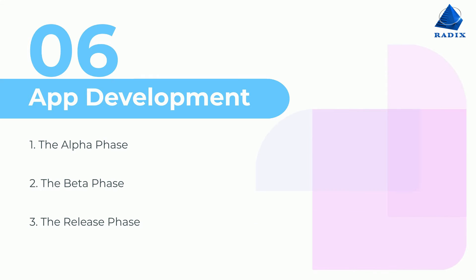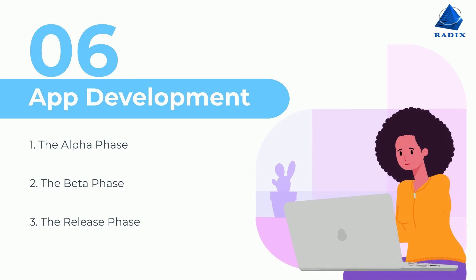Step 6: App Development. This stage is the sole and most active of mobile app development process steps. The three main sub-phases of the development process are the alpha phase, the beta phase, and the release phase.